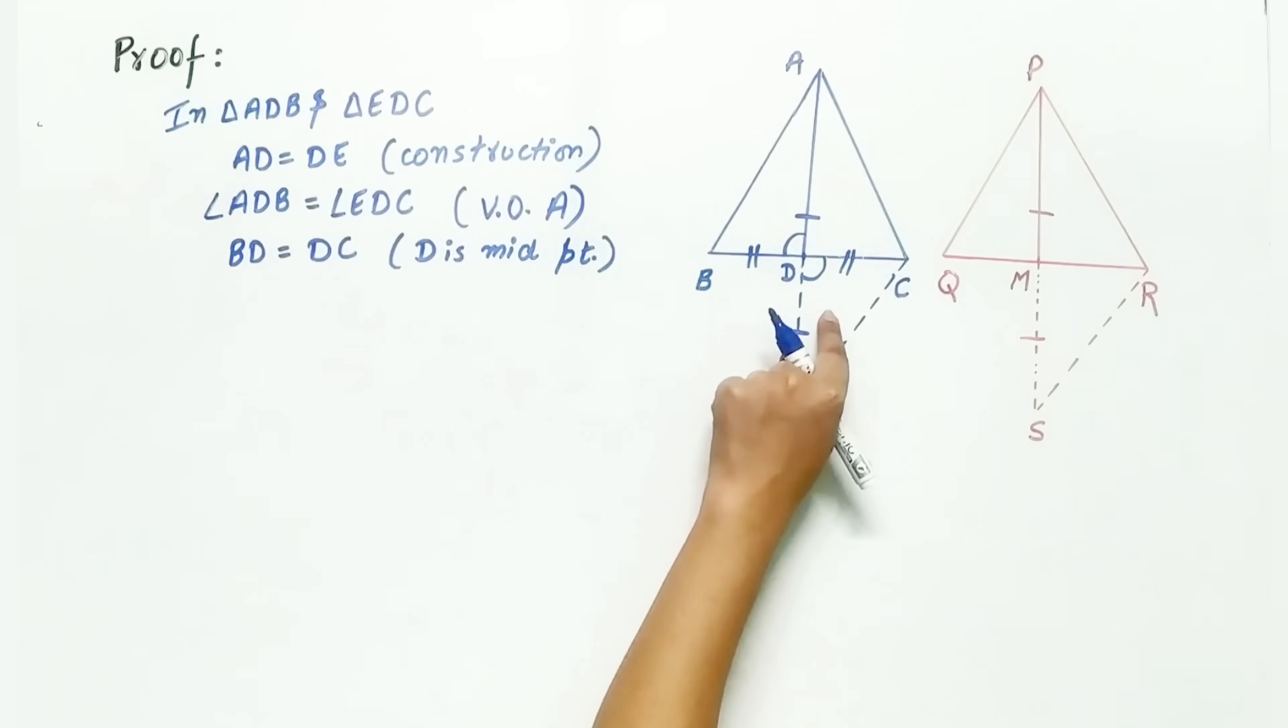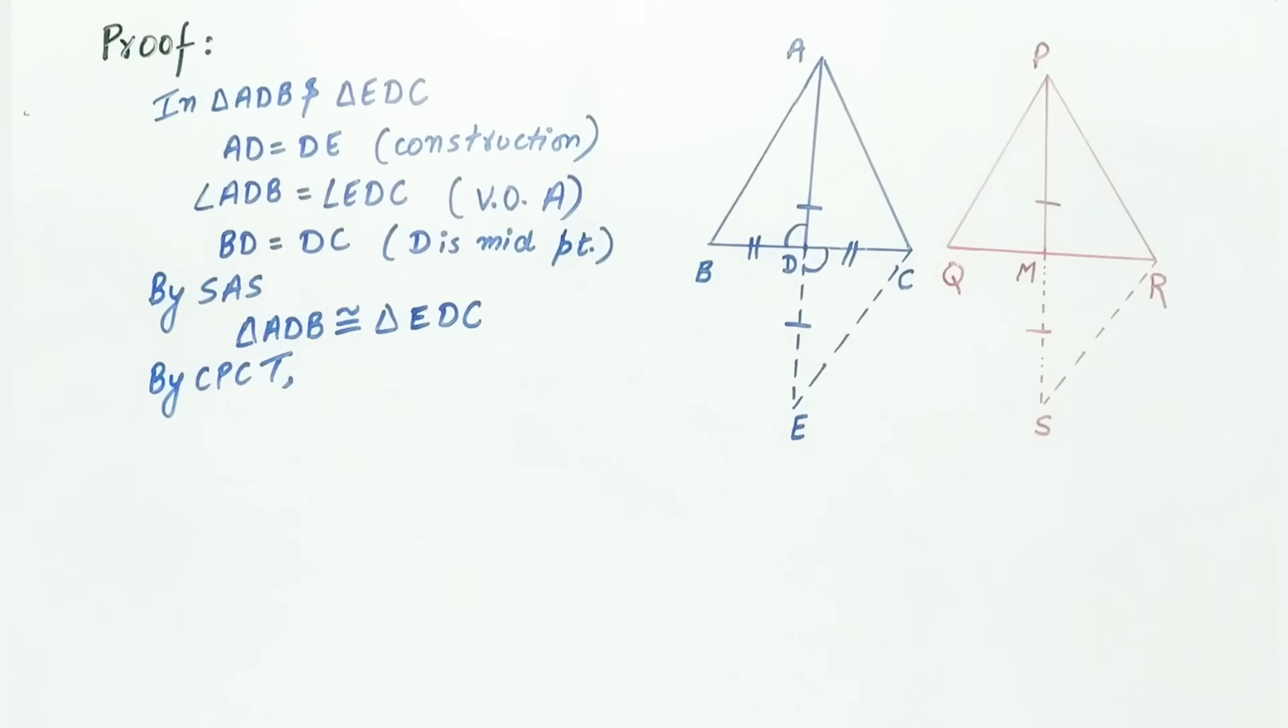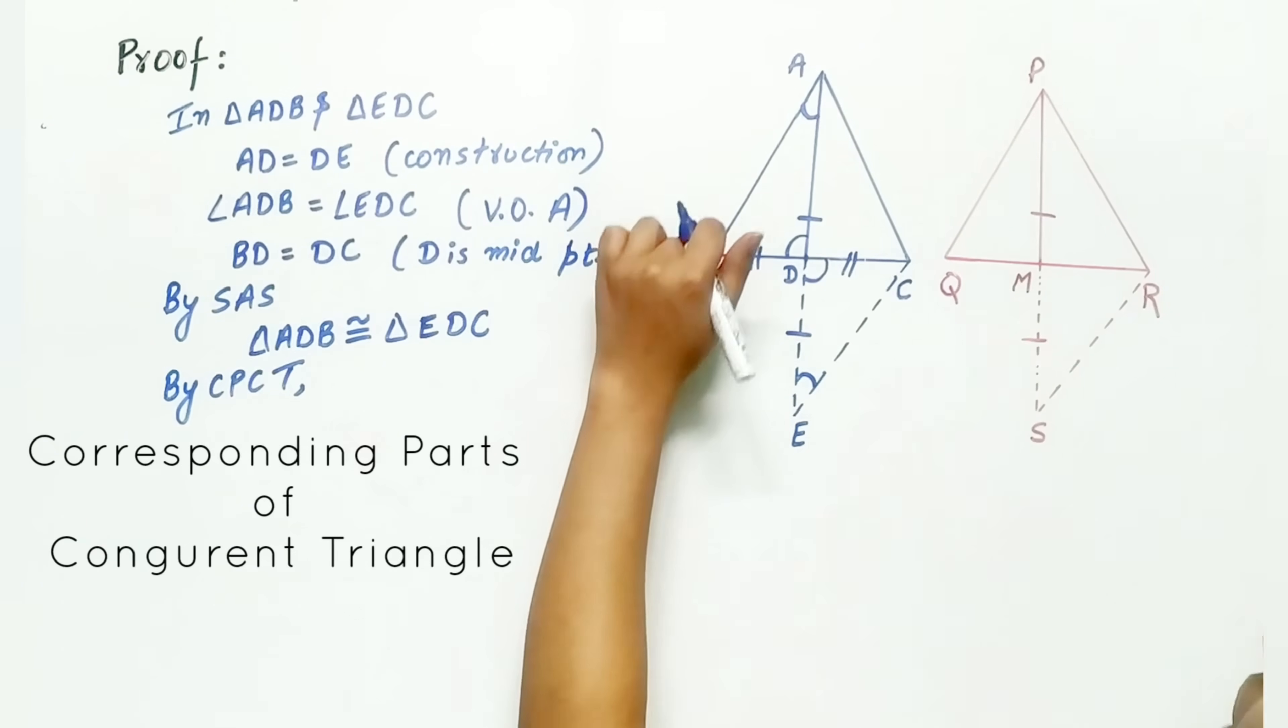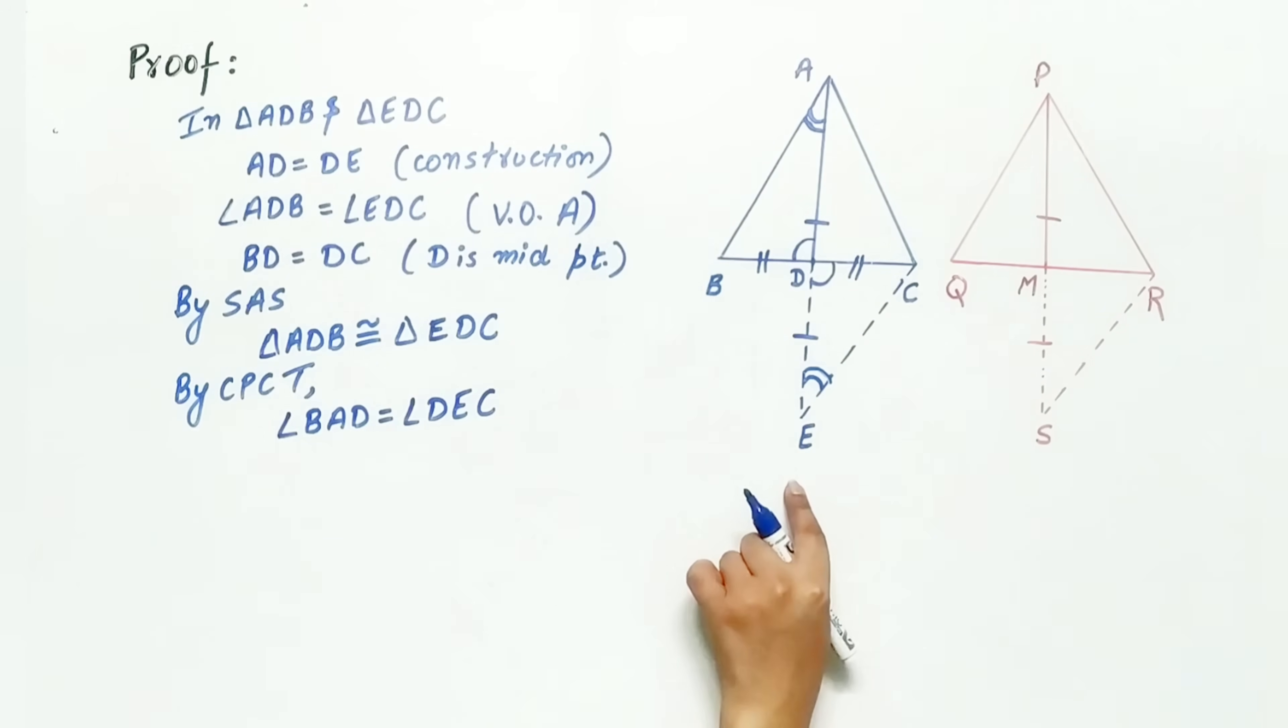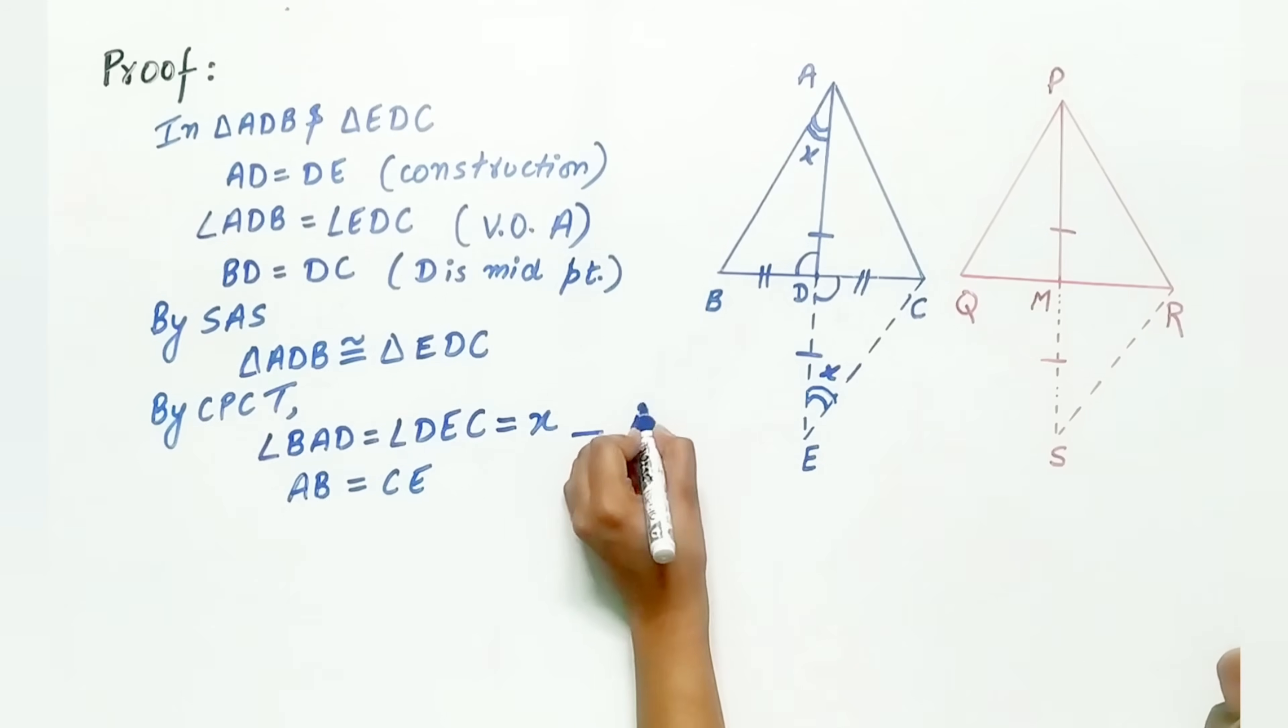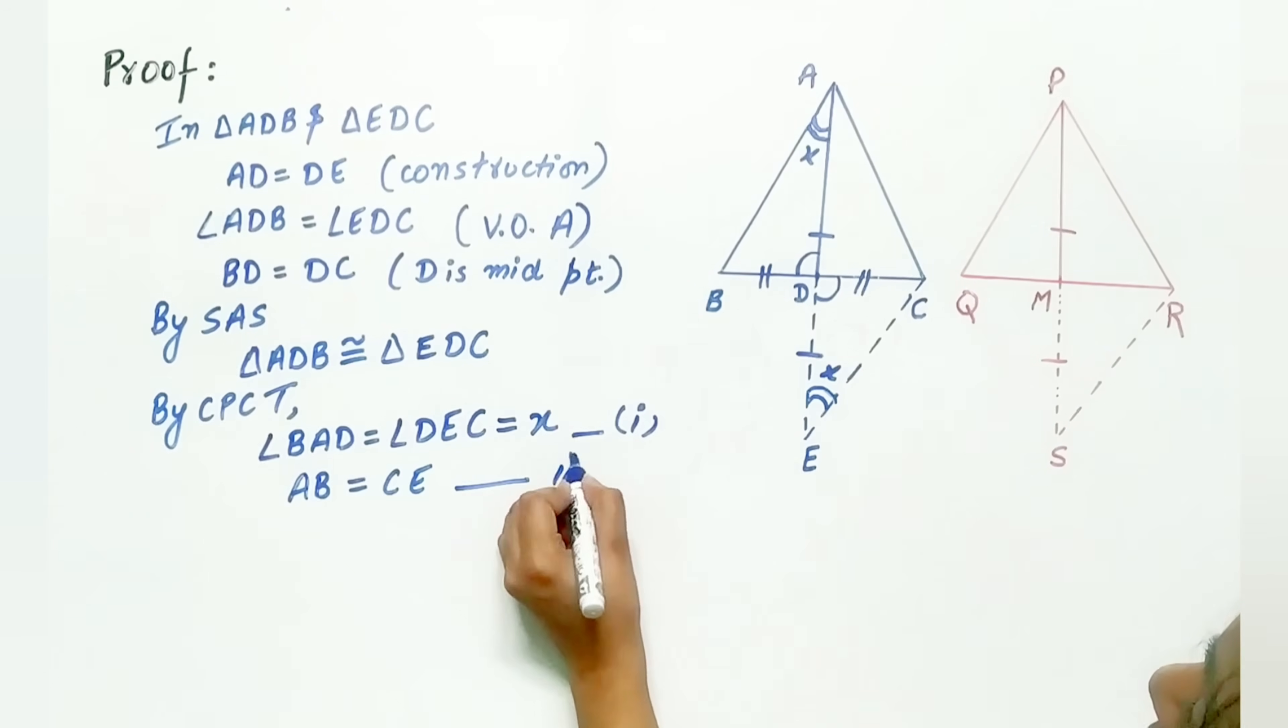both these triangles are congruent. And by CPCT, angle BAD is equal to angle DEC and side AB is equal to CE. Let it mark as 1 and let it be 2nd.